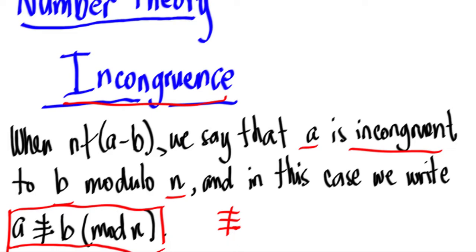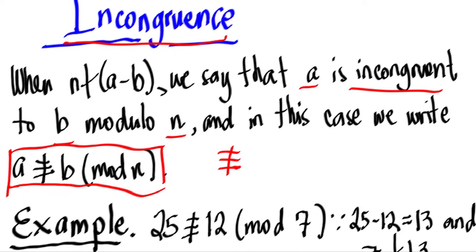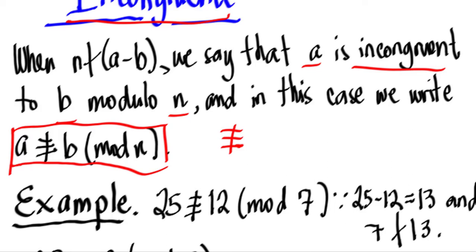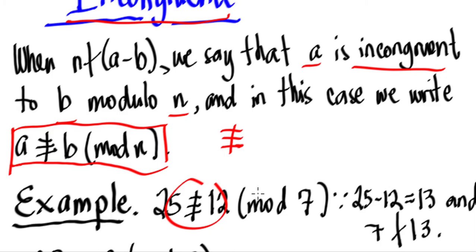Now let's have some simple examples. We can say that 25 is incongruent to 12 modulo 7, because 25 minus 12 equals 13, and 7 is not a factor of 13. So n is not divisible by the difference a minus b, and therefore we say that it's incongruent.